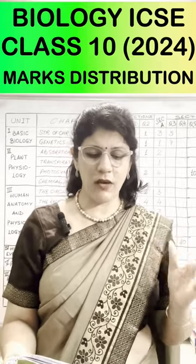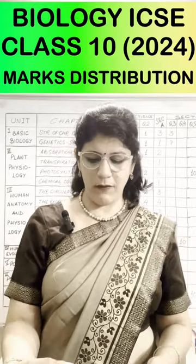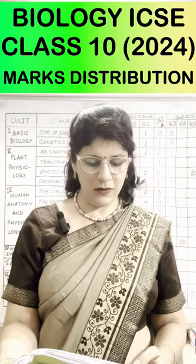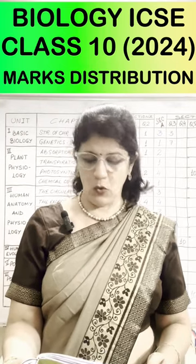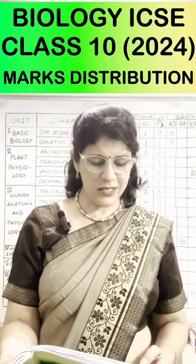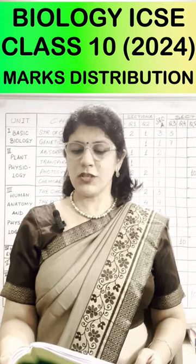Maximum coverage goes to Unit 3 Human Anatomy. Unit 4 Human Evolution carries 5 marks, Unit 5 Population has no marks, and Unit 6 Pollution carries 8 marks.